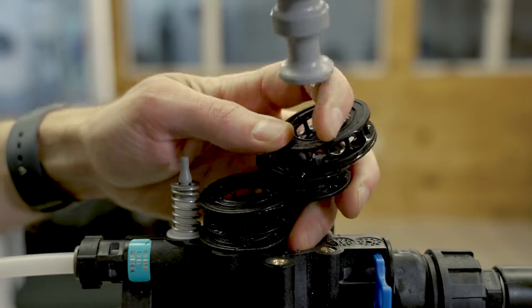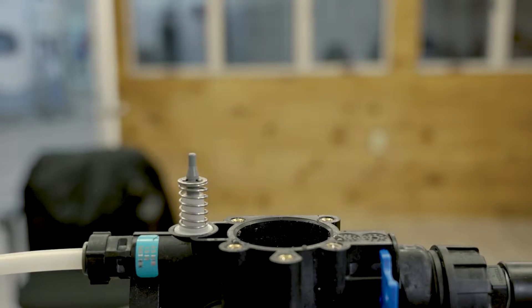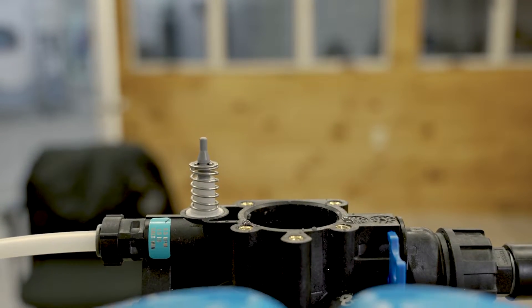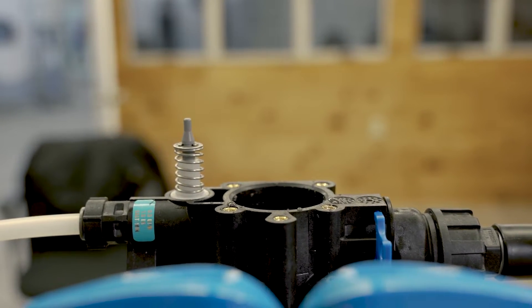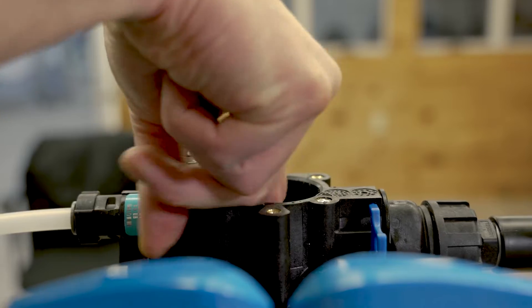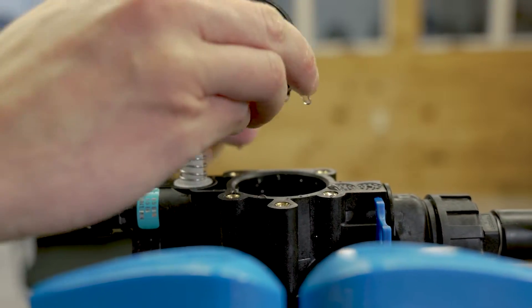Some of the seals and spacers may come out with the piston, depending on how long your system has been in. They may all stay in the valve body and you'll need to dig them out. You'll have five seals and four spacers, and then there will be a bottom spacer also.